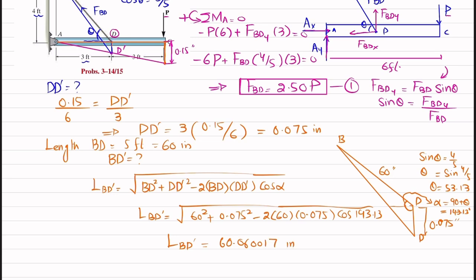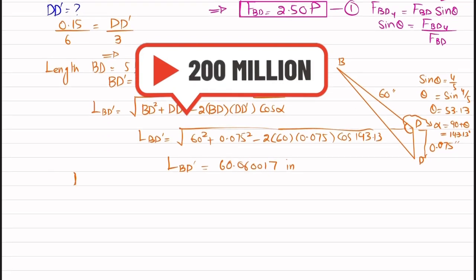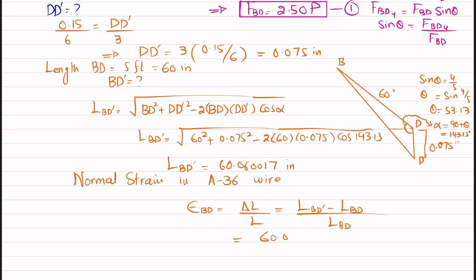The new length of the stretched wire is 60.060017 inches. The normal strain in the A36 wire BD is: ε = ΔL / L₀ = (BD' − BD) / BD = (60.060017 − 60) / 60 = 1.003 × 10⁻³ inch/inch (dimensionless).